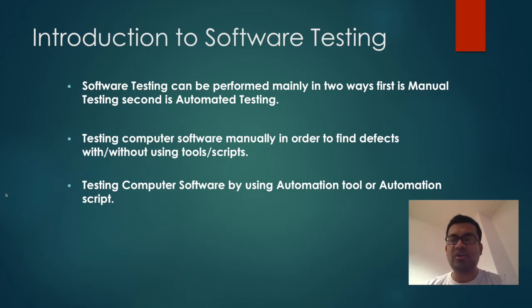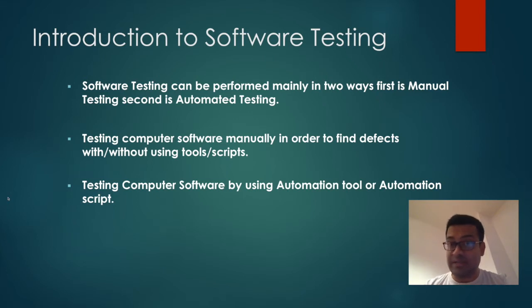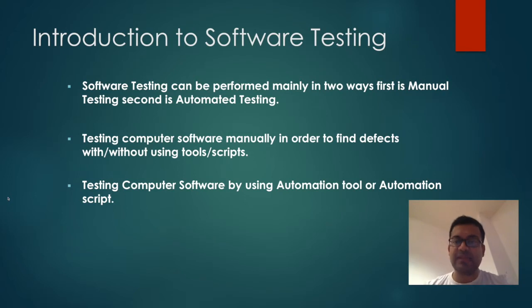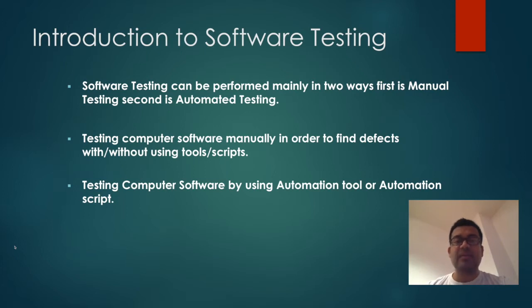Software testing can be performed mainly in two ways: either as manual testing or as automated testing. Manual testing doesn't mean using a manual document — it means in-person testing. If you test using bots, artificial intelligence, or scripts, that is automation testing. If a manual tester is involved in the testing process and is continuously testing, that is manual testing. Testing computer software manually to find defects, with or without use of tools or scripts, is manual testing; using automation scripts or tools is automation testing.